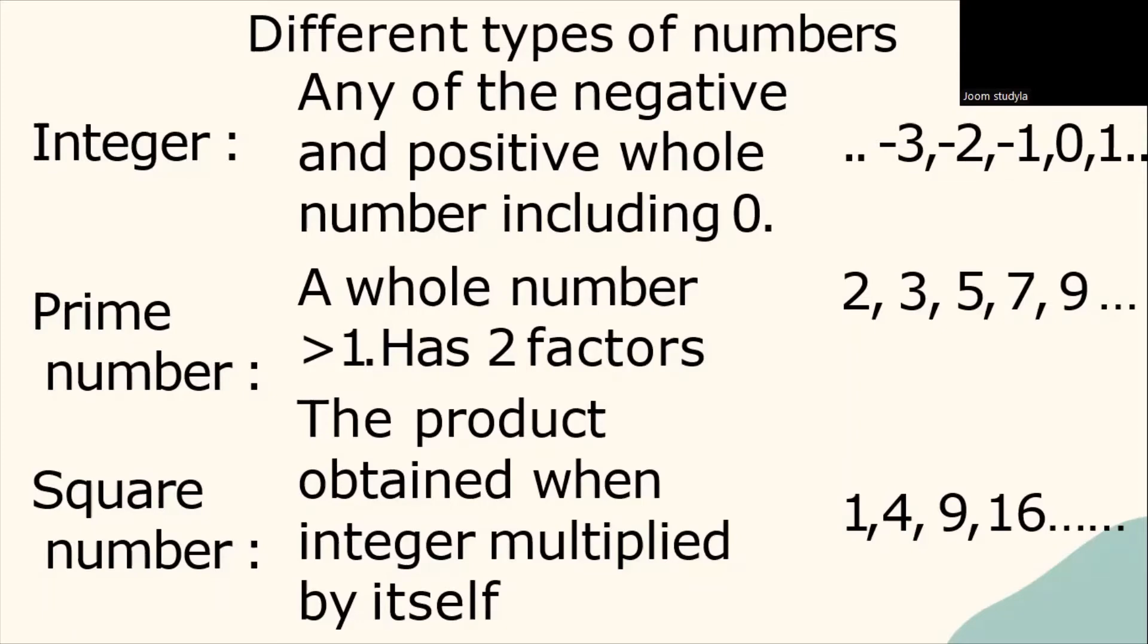And finally, what is a square number? Square number is the product obtained when integer multiplied by itself. Example: you have 1, 4, 9, 16 and so on. 2 to the power of 4 is 16, 2 to the power of 2 is 4, etc.